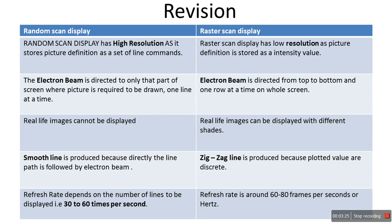Fifth point: in random scan display the refresh rate depends on the number of lines to be displayed, at 30 to 60 frames per second. In raster scan display the refresh rate is around 60 to 80 frames per second, or 60 to 80 Hz. These are the key differences between random scan display and raster scan display.